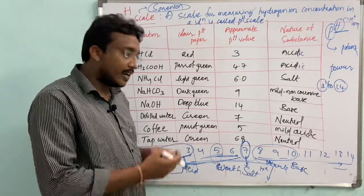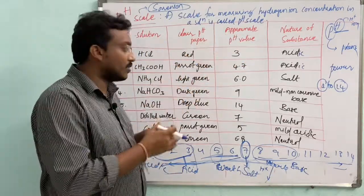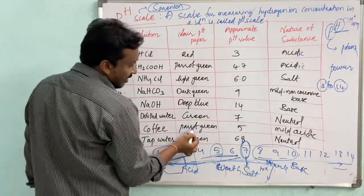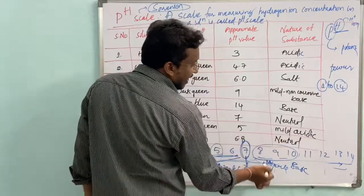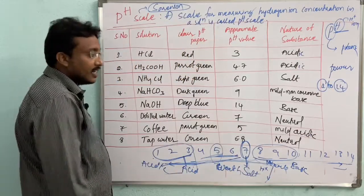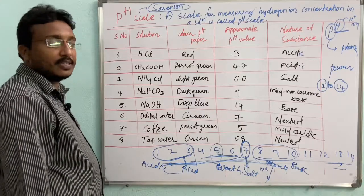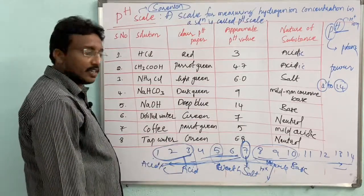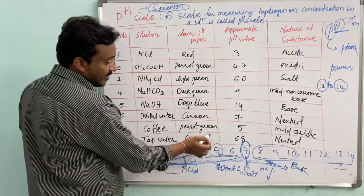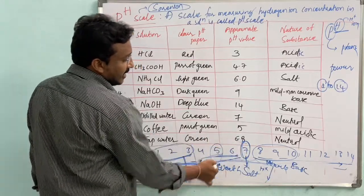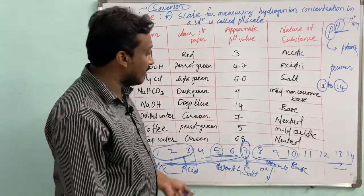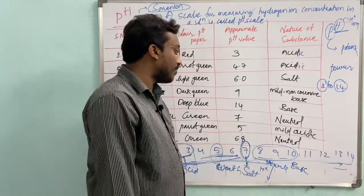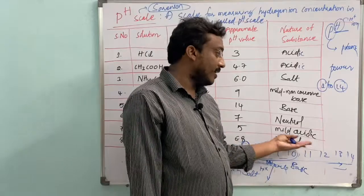The pH indicator in coffee shows parrot green color, indicating it is mildly acidic with a pH value of 5. Tap water gives a green color with a pH value of 6.8, which is considered neutral.